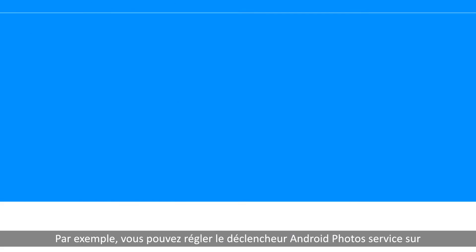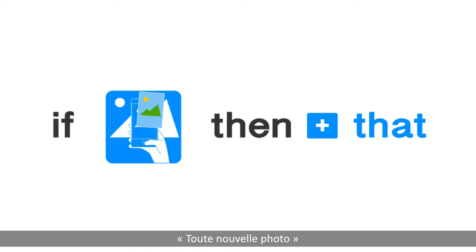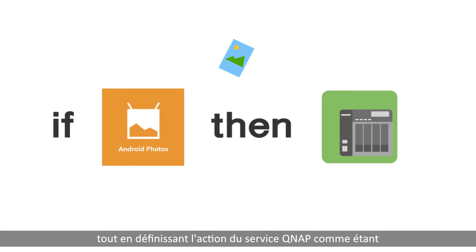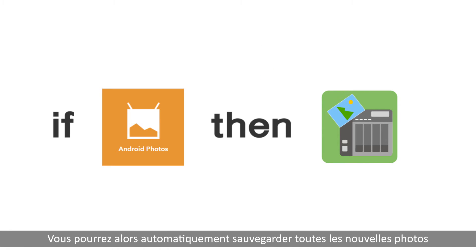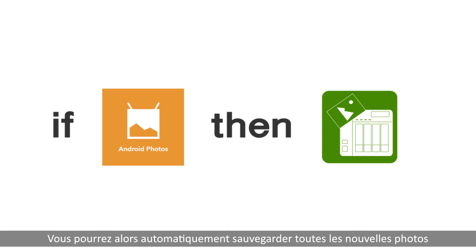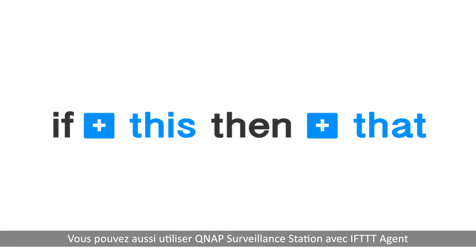For example, you can set the trigger on Android Photo Service as 'Any New Photo' and the action on QNAP Service as 'Download File from URL.' Then you can automatically back up all your new photos from your Android devices to the QNAP NAS.